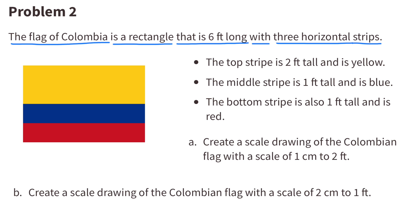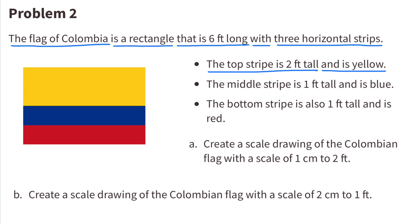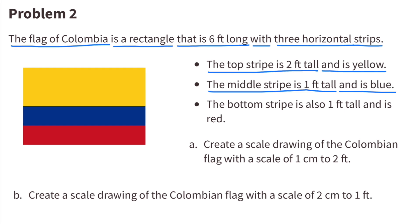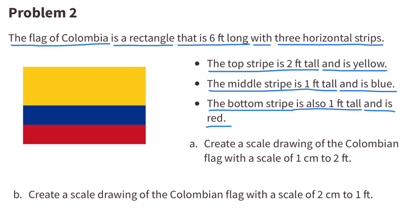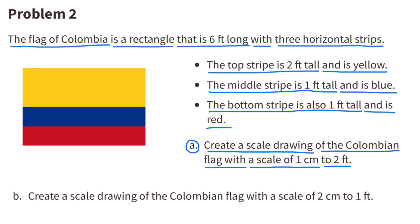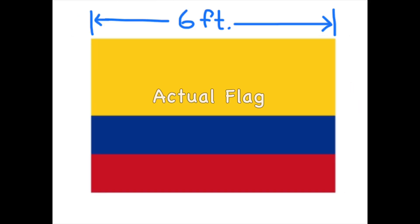Number two: the flag of Colombia is a rectangle that is 6 feet long with three horizontal stripes. The top stripe is 2 feet tall and is yellow, the middle stripe is 1 foot tall and is blue, and the bottom stripe is also 1 foot tall and is red. Part A: create a scale drawing of the Colombian flag with a scale of 1 centimeter to 2 feet.